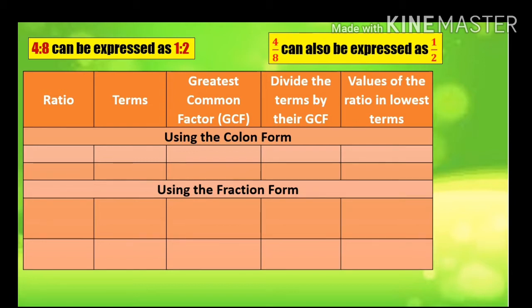Listen carefully. What do we have here in the table? We have: ratio, terms, greatest common factor or GCF, divide the terms by their GCF, and values of the ratio in lowest terms. Under that, we have using the colon form and using the fraction form.